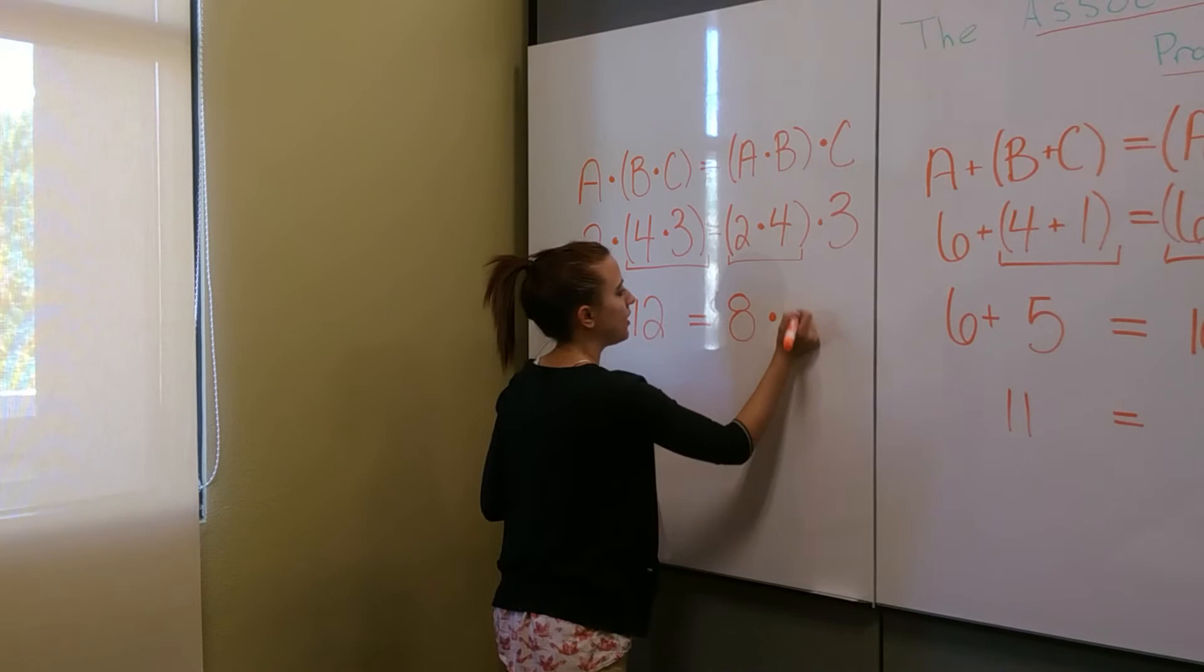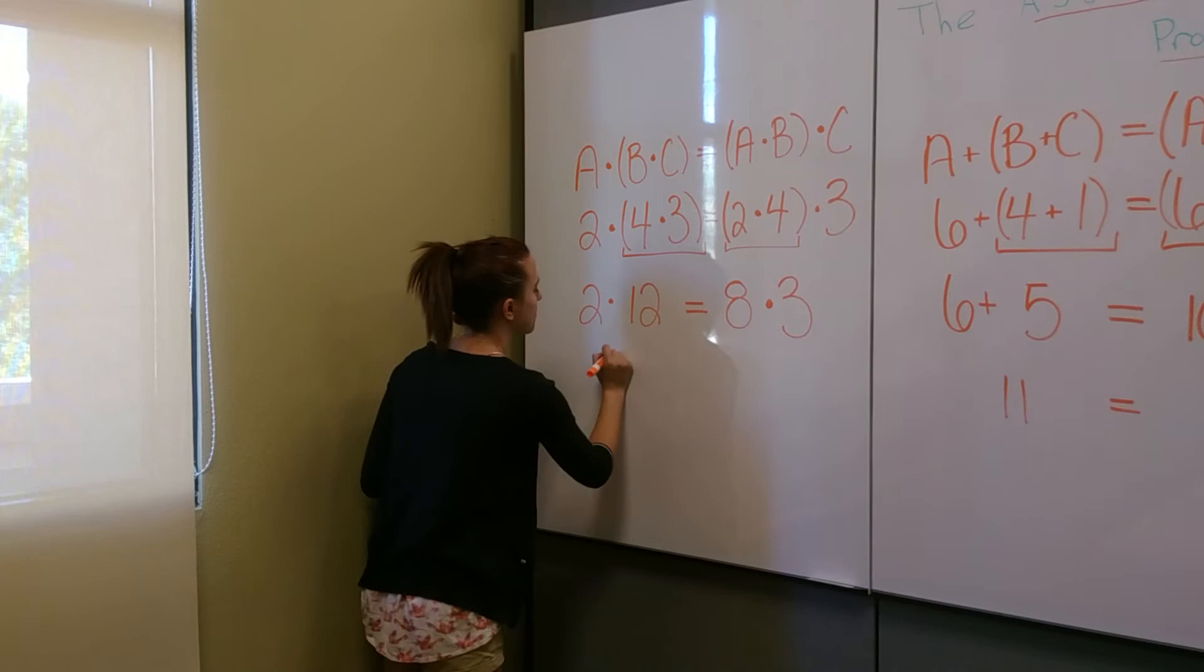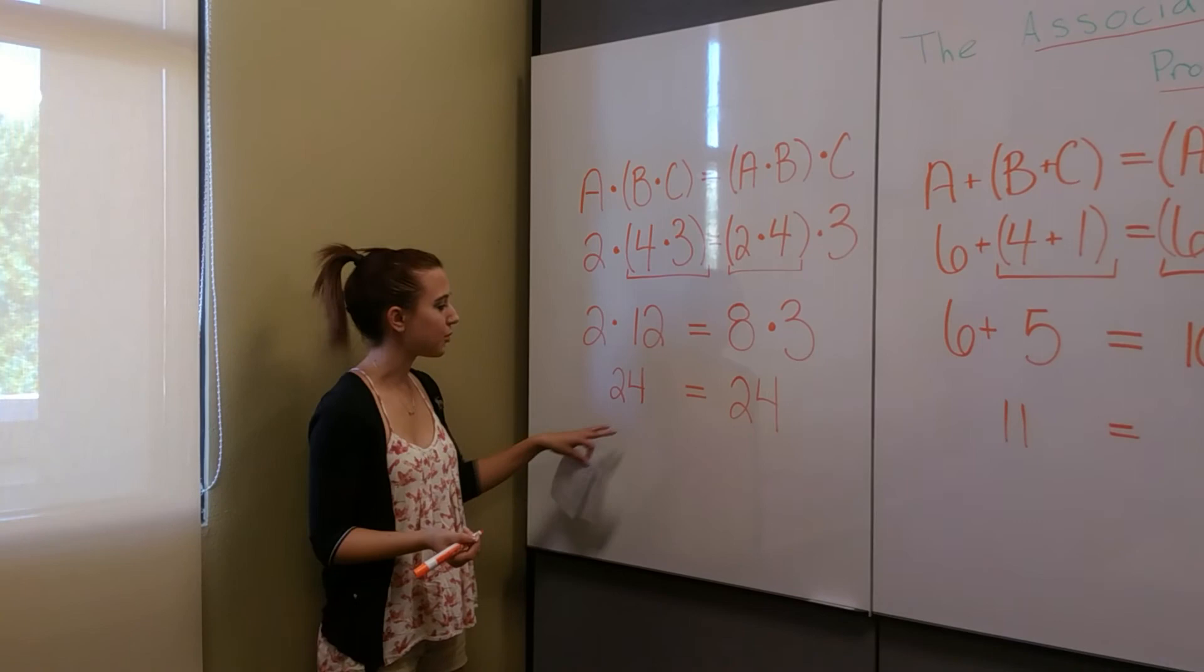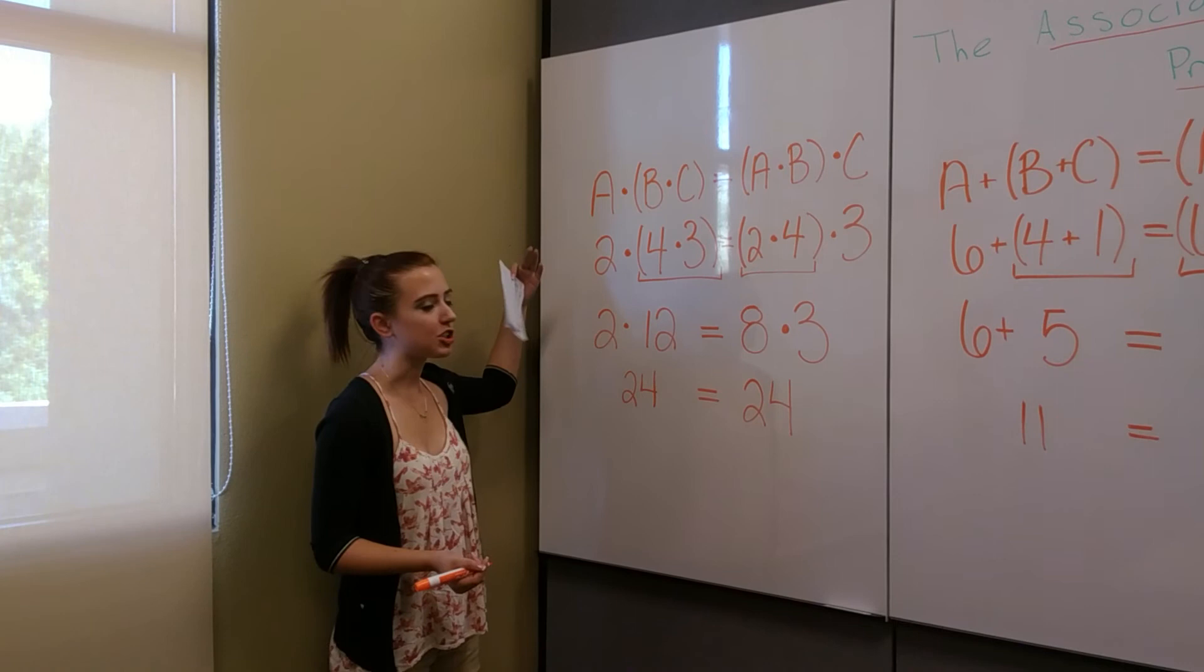And now we just solve. 2 times 12 is equal to 24. And then bring down our equal sign again. And then 8 times 3 is also equal to 24. So that checks out. We get 24 is equal to 24, which is true. And so that proves that the associative property also works with multiplication, not just addition. And so that's a quick summary of how the associative property works.